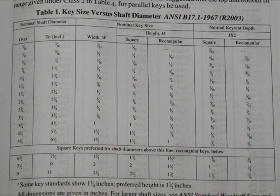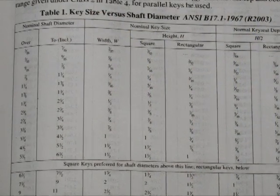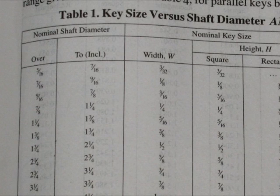So in Table 1, we have key size versus shaft diameter. So we're looking for a half-inch shaft. That's over 7/16ths and up to 9/16ths. That tells us that we need a 1/8th inch wide key. And obviously, if we're using a square key, it's going to be 1/8th of an inch high.